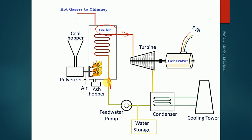Inside the tubes we have water flowing through. Hot gases are generated by the combustion chamber inside the boiler, where fuel is burned. The fuel may be solid, liquid, or gaseous. In solid fuel, coal is generally used; in liquid fuel, diesel or petrol is used; and in gaseous fuel, LPG may be used. In the figure shown, coal is being used as the fuel, and it is supplied through a device called a coal hopper.